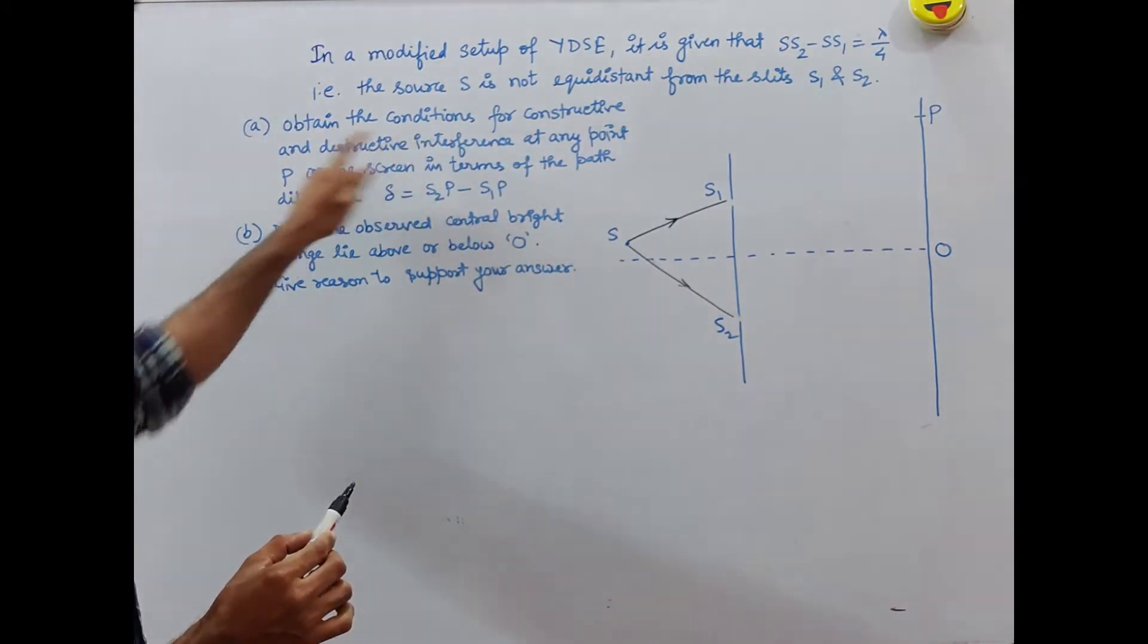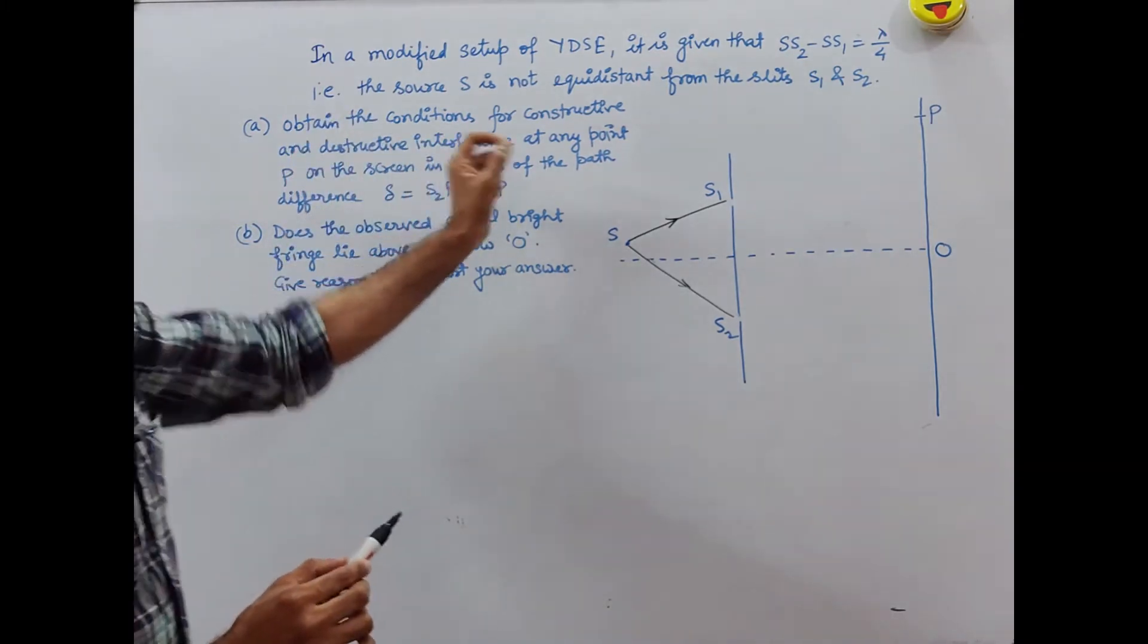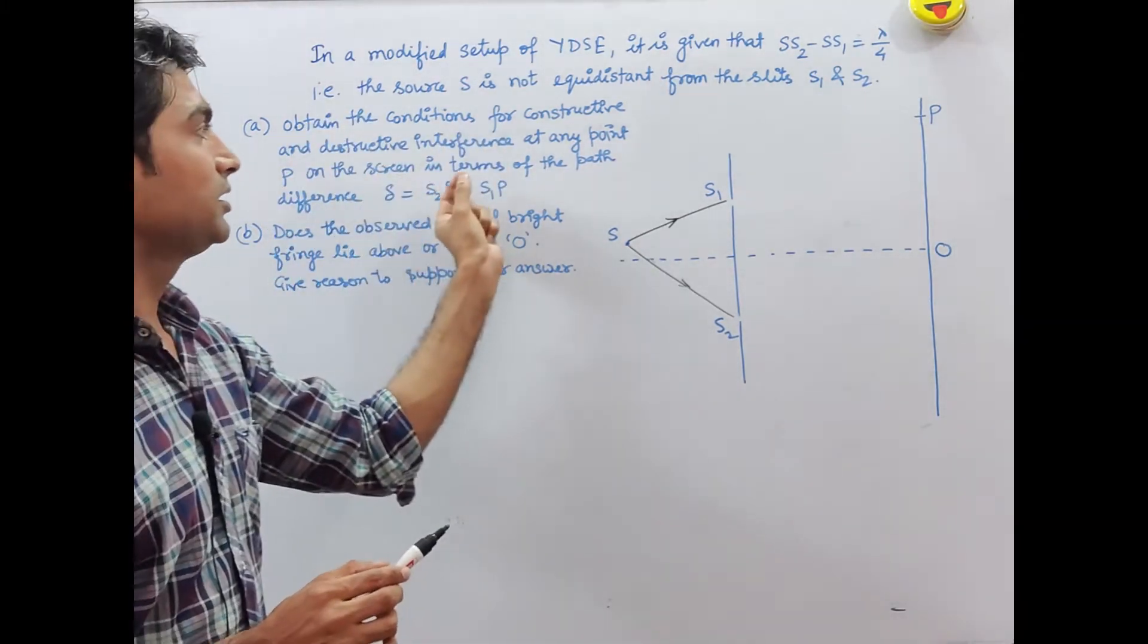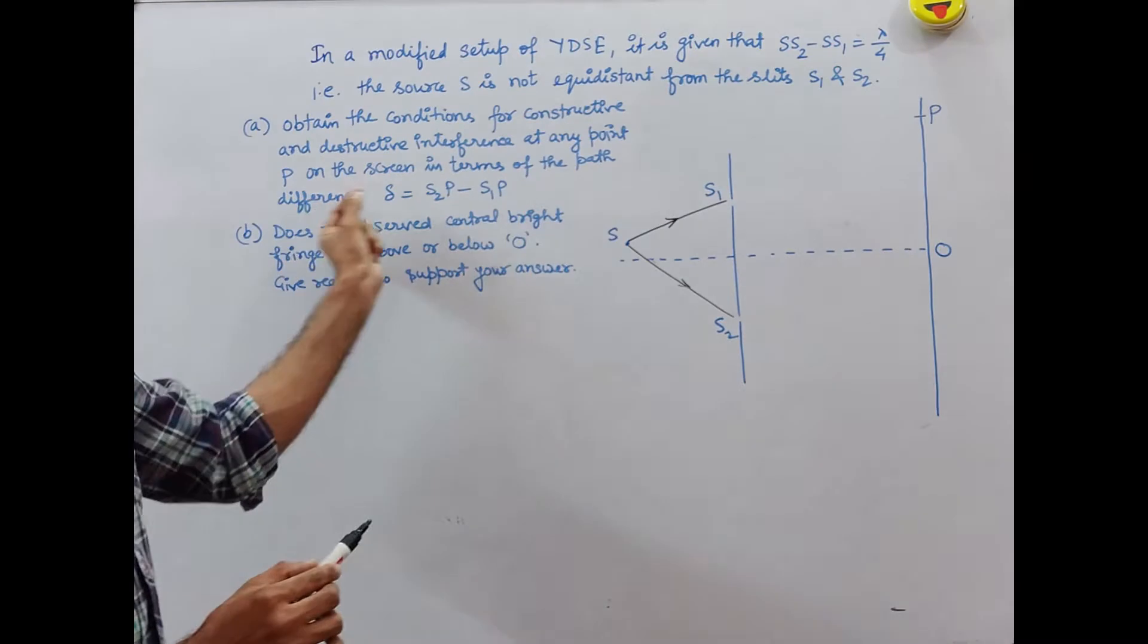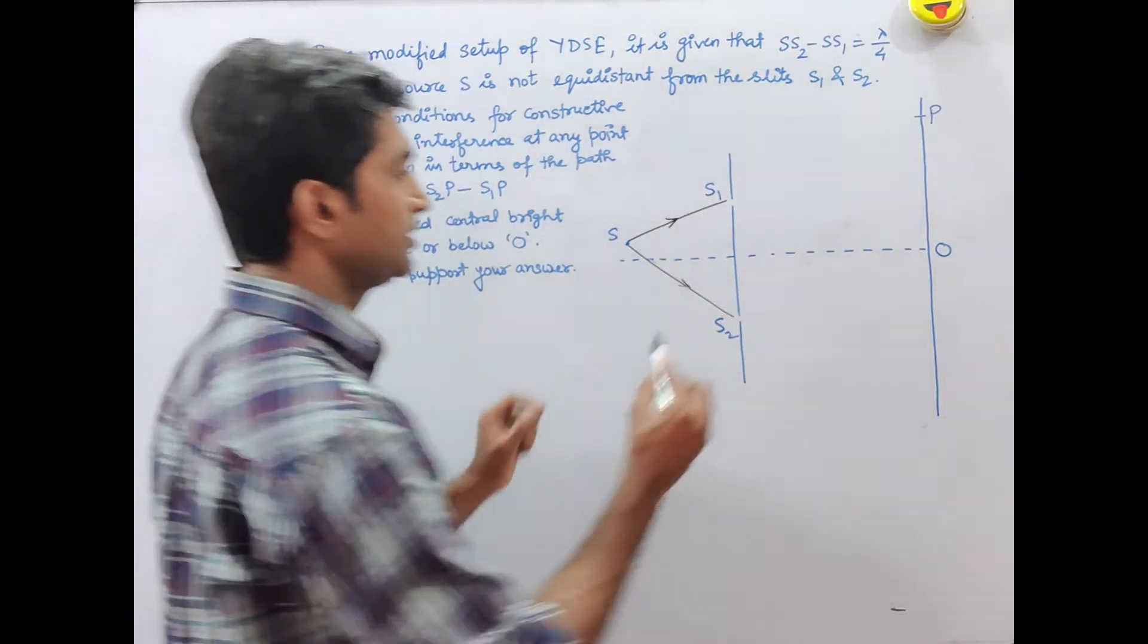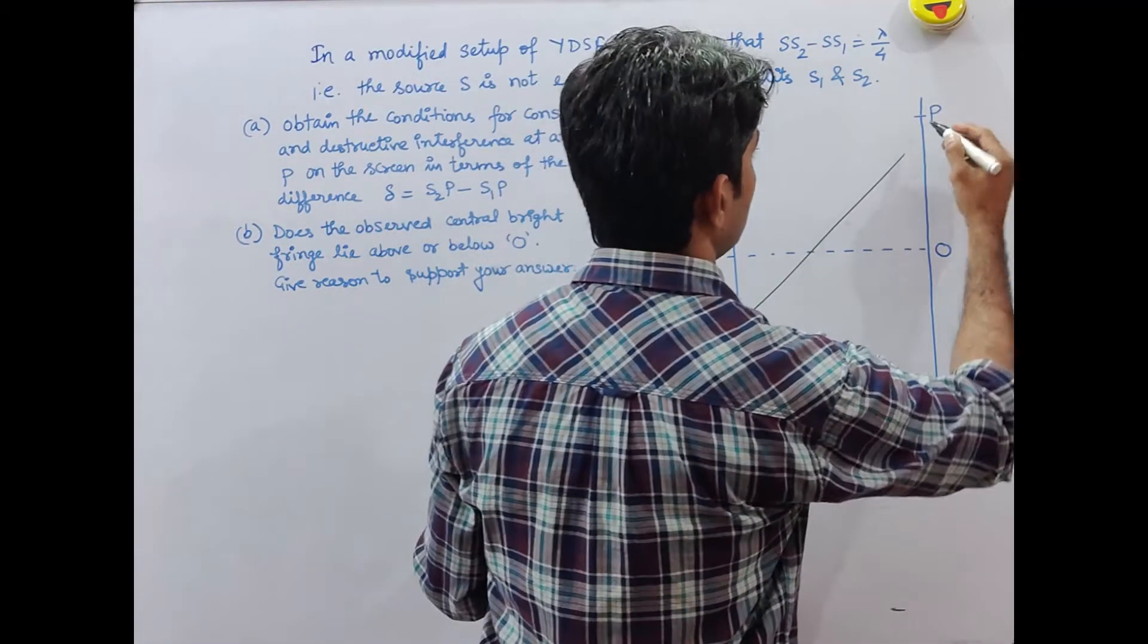Find the conditions for constructive and destructive interference at any point P on the screen in terms of path difference S2P minus S1P.